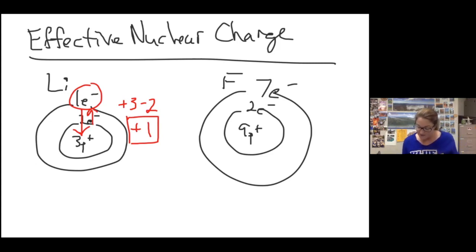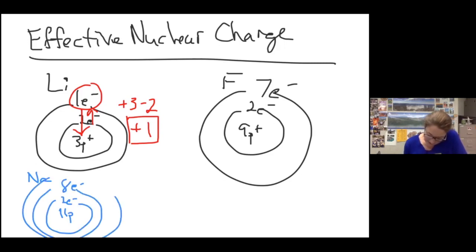If you repeat this pattern with something like sodium, you're going to find sodium has 11 protons, two electrons in the first shell, eight electrons in the second shell, and then one valence electron. Sodium is pulled inward by 11 protons and pushed outward by 10 electrons, again, for an effective nuclear charge of plus one.